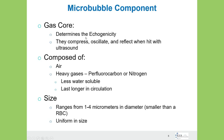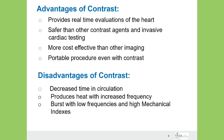The gas core determines the echogenicity. The gas is compressed, oscillates, and reflects when hit with ultrasound — this is when we see the contrast agent. They're mainly composed of air or heavy gases. The heavy gases are usually a little less water soluble, which helps them last longer in the circulation. The size of contrast agents today ranges from one to four micrometers in diameter — smaller than a red blood cell — so they can easily pass through the circulation and the lungs, and they're a lot more uniform in size than saline contrast.